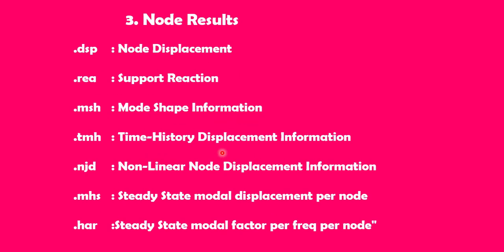For node results, results will be available in the following temporary file formats: .DSP and .REA represent nodal displacement and support reactions. If you have dynamic analysis, .TMH represents the time history displacement information. For steady-state model displacement, you can refer to .MHS or .HAR files. Keep in mind that if your STAAD file contains static or dynamic analysis, based on that, these temporary files will be generated.